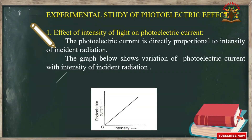Now we are going to discuss the facts from the experimental study of the photoelectric effect, also known as Lenard's experimental study. We will discuss the observations made by Lenard. The first observation is the effect of intensity of light on the photoelectric effect. A graph is drawn between photoelectric current and intensity.